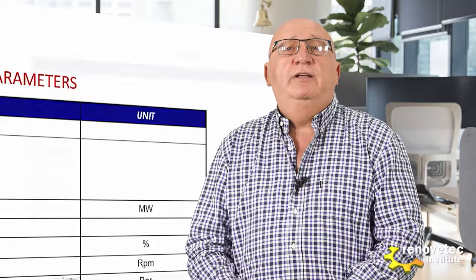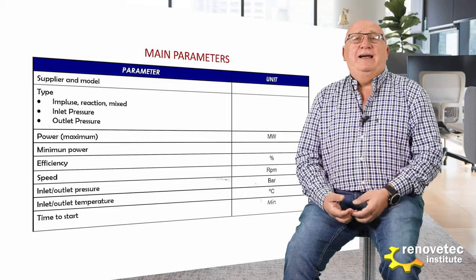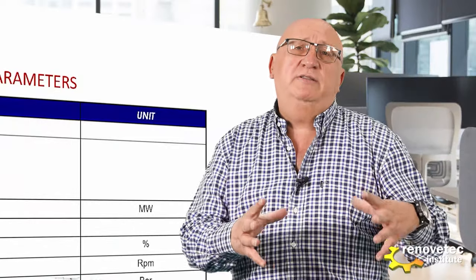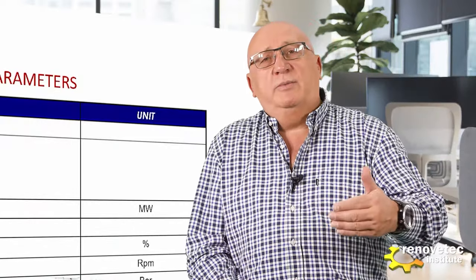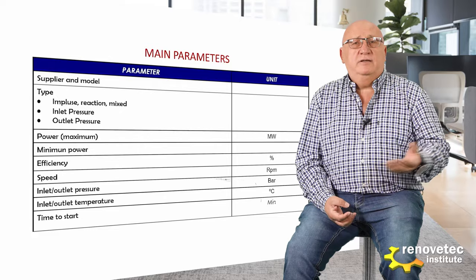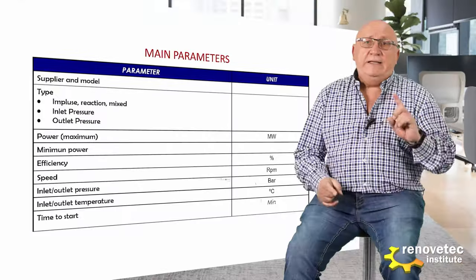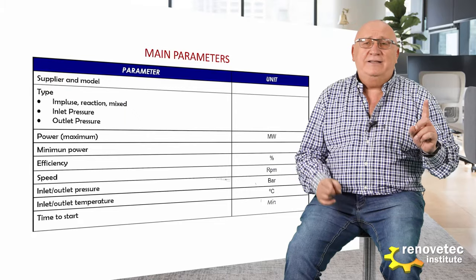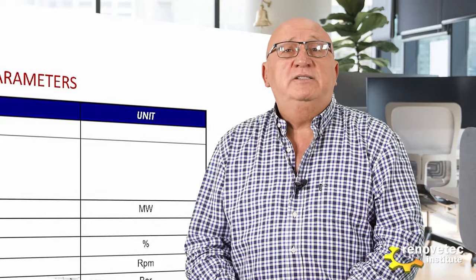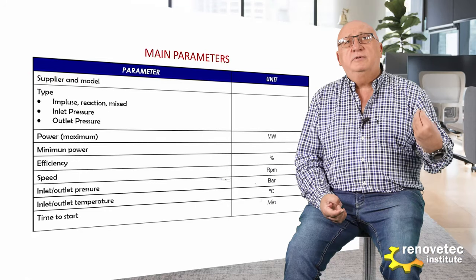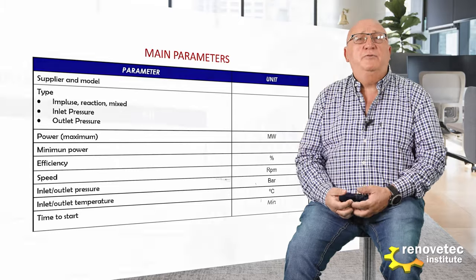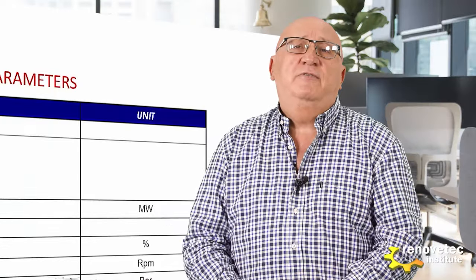The speed of rotation is another very important characteristic. Normally the most common situation is that the turbine rotates at the same frequency as the grid. But in small turbines this is not normal, and the turbine normally rotates at a higher speed than the frequency of the electrical energy. Inlet and outlet temperature and inlet and outlet pressure are two more very important characteristics. And the last one is the time to start — the time that the process of accelerating the turbine, synchronizing, and reaching full power takes. This is a very important characteristic.